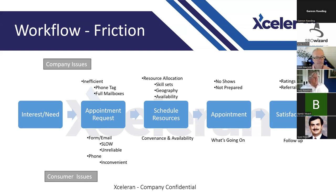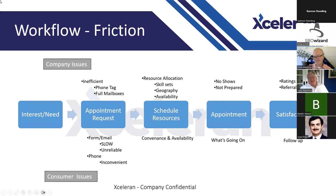In the appointment request process, requests typically come in through a form filled out from a website, an email request, or phone. Most people today hate talking on the phone and making appointments — getting put on hold, getting mailboxes that are full. That's a huge friction point, and oftentimes the first phone call doesn't resolve it; they have to call back. Phone is a high source of friction.